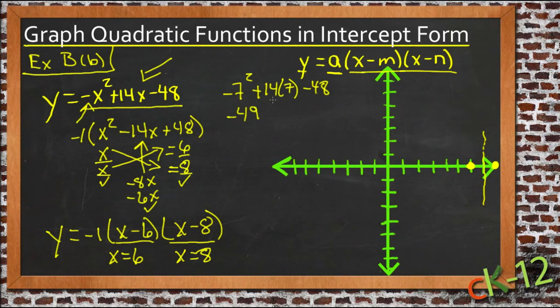and I'm going to go ahead and group these. negative 49 minus 48, plus 7 times 10 is 70, 7 times 4 is 28, so plus 98.